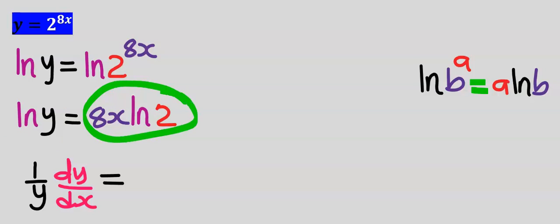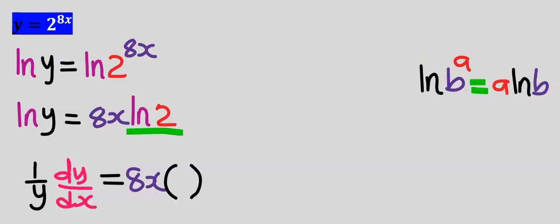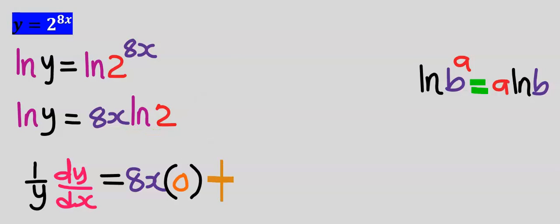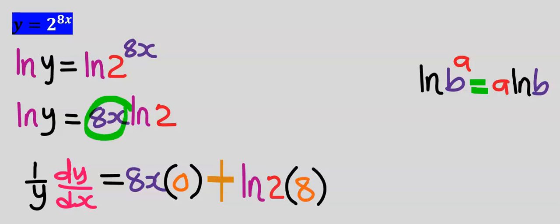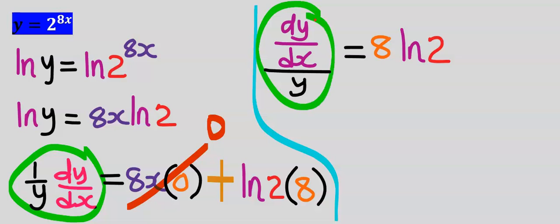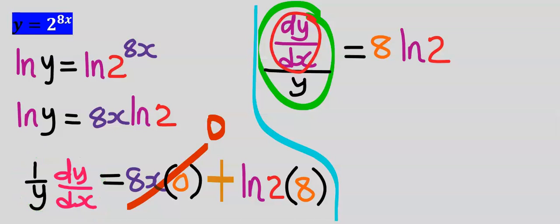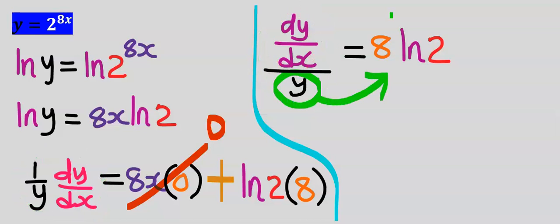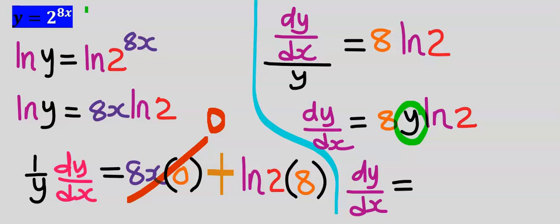Apply the product rule on the right side. Differentiate the natural log of 2 — the differentiation of the natural log of any constant is 0. Introduce a plus from the product rule, then differentiate 8x to get 8. The term 8x multiplied by 0 gives 0. Rewrite and move y from the denominator to the other side to multiply everything, then replace y from the given question — this is our dy/dx.